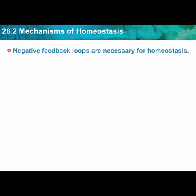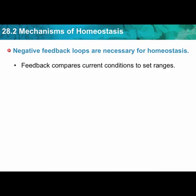Negative feedback loops are necessary for homeostasis too. Otherwise, once we start sweating, what's going to stop it? We need a negative feedback loop to say we're done — shut it down. Feedback compares current conditions to set ranges. Your temperature — are you between 98.6 and 100 degrees? That's okay. Start to get a little below that, you start to shiver. Get a little above that, you start to sweat. And negative feedback counteracts the change — you don't want to sweat too much, you don't want to shiver too much.